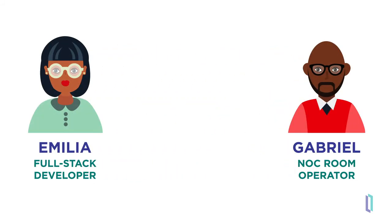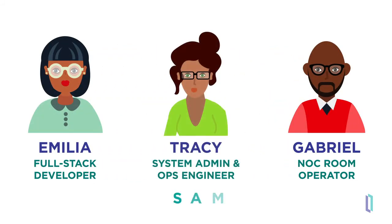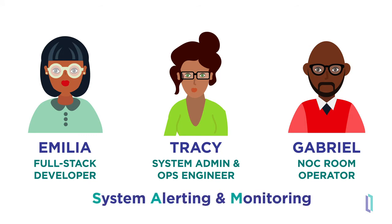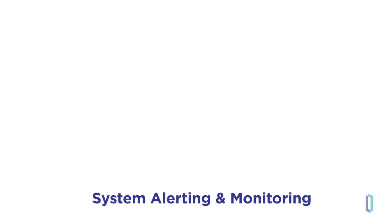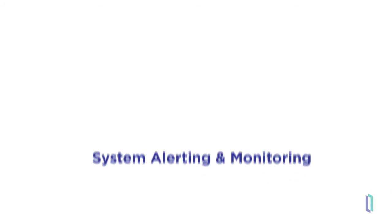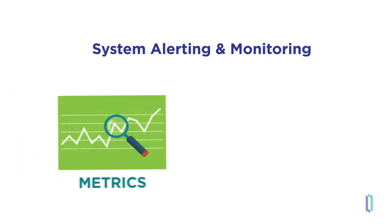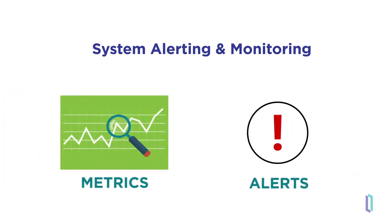Luckily for Amelia, Tracy, and Gabriel, SAM — System Alerting and Monitoring — provides simple solutions for those who develop, maintain, and monitor InterSystems IRIS-based solutions. Out of the box, SAM provides two major groups of features: metrics and alerts. These can be even more effective when combined, meaning you can configure custom alerts based on the metrics that matter for your situation.